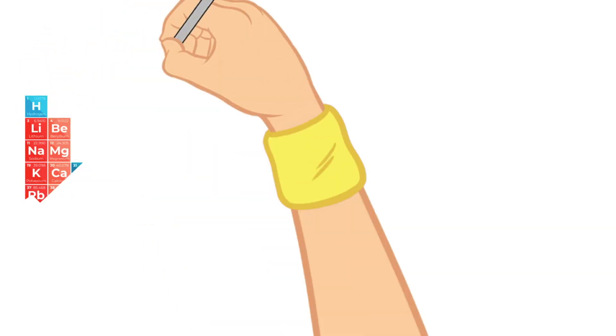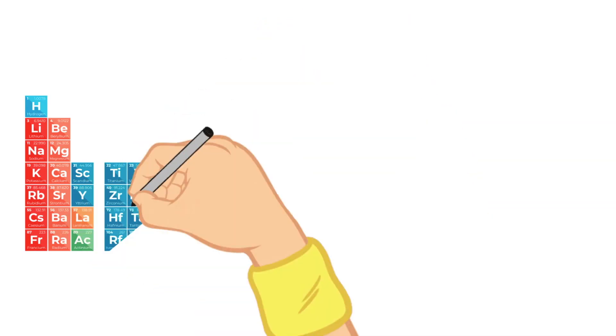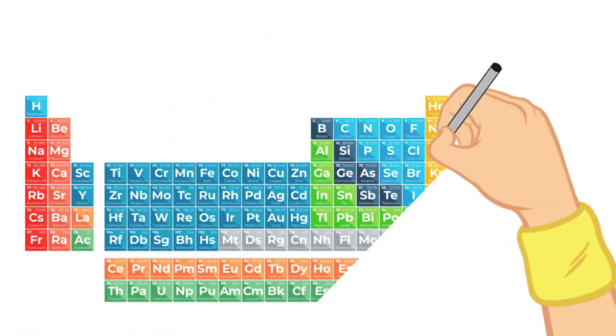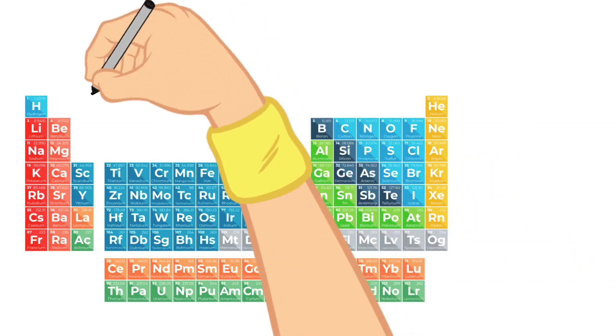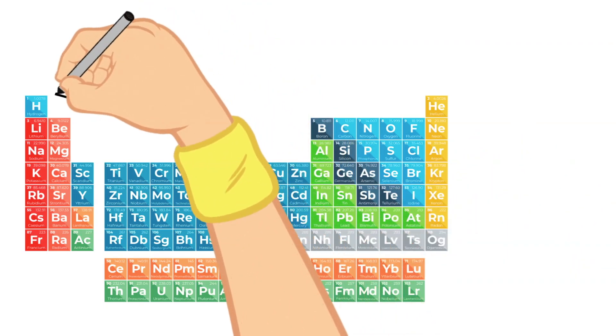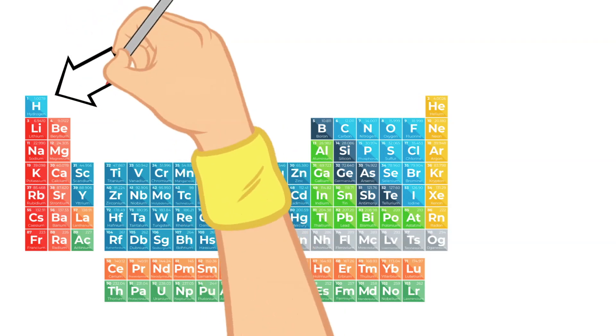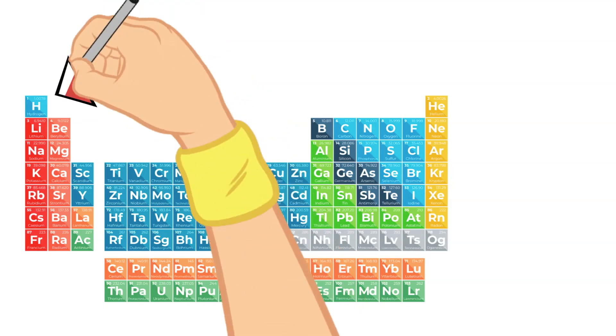Today we are going to dive into the first four elements of the periodic table. The first element that we're going to talk about today is hydrogen. Now in previous videos we've already talked a good deal about hydrogen but we're going to review what we know and add a little to it as well.